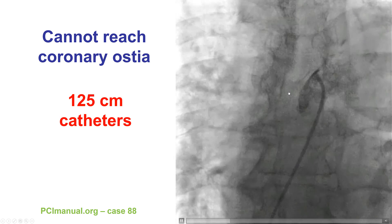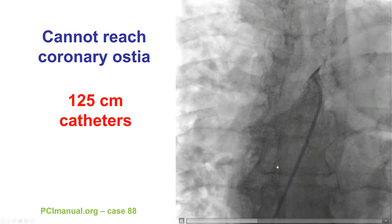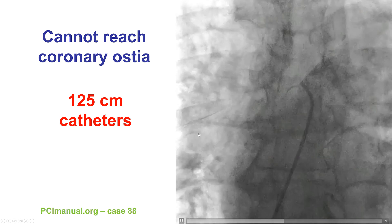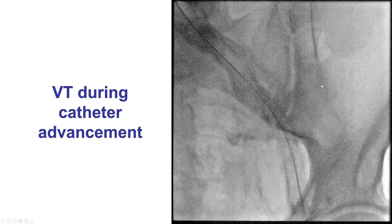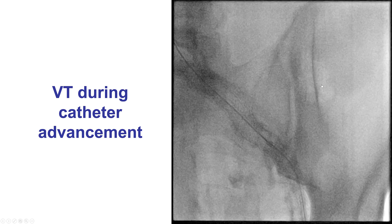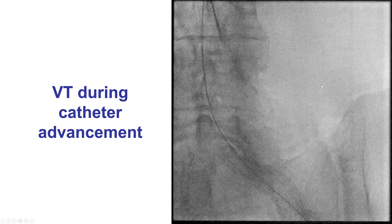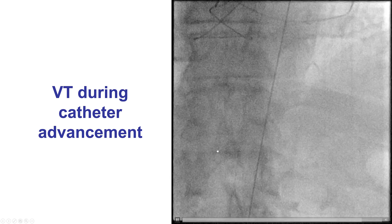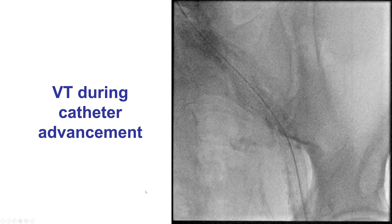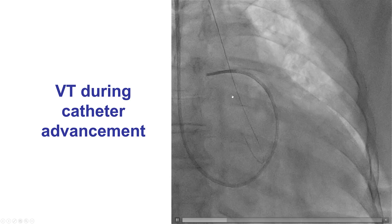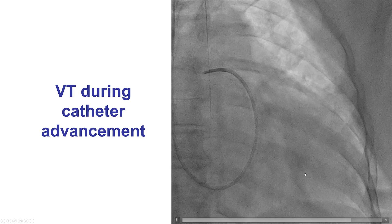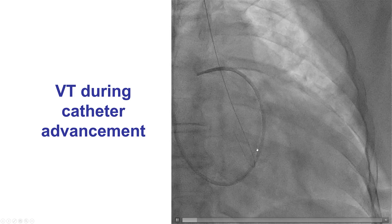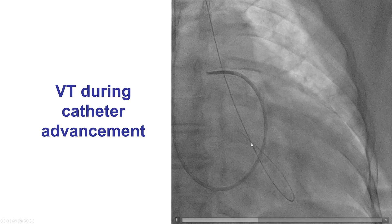Sometimes the catheter can be too short to reach the coronary ostium — for example, in patients with severe aortic tortuosity, such as hypertensive or elderly patients. In such patients, 125 cm long catheters, which are longer than the standard 100 cm, can be used. One potential complication during catheter advancement is ventricular ectopy or even ventricular tachycardia and fibrillation, because the 0.035 wire may go into the left ventricle and cause arrhythmias. It is critical to monitor the EKG and the tip of the 0.035 wire during catheter advancement, especially when there is left ventricular thrombus, to avoid dislodgement and systemic embolization.